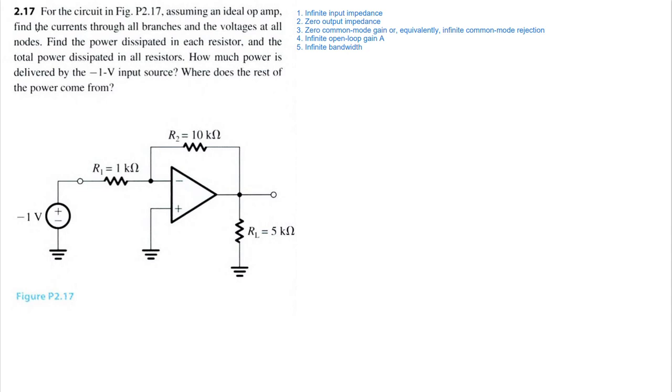Solve Problem 2.17 from Microelectronics Circuits 8th Edition by Cedron Smith. We have this ideal op-amp circuit and we want to find the current through all branches and the voltages at all nodes. We also want to find the power dissipated in each resistor, the total power dissipated, how much power is being delivered from the input source, and where the rest of the power comes from.